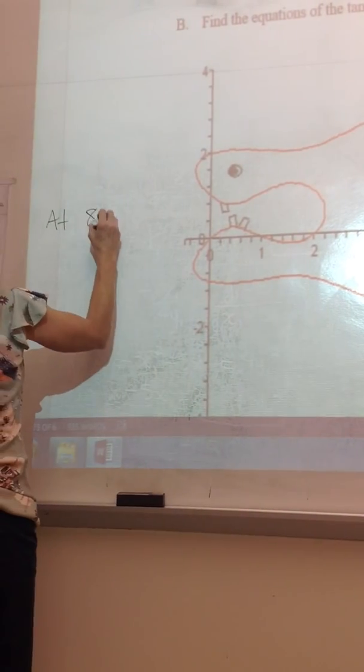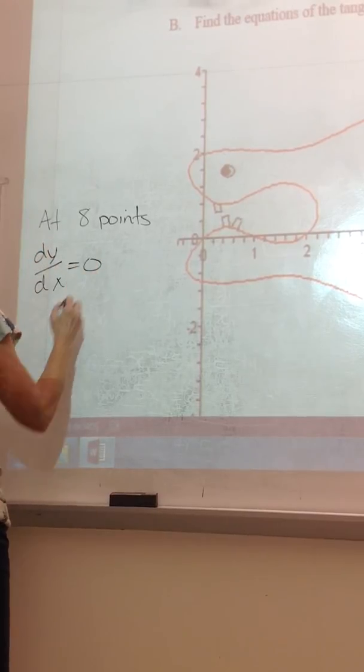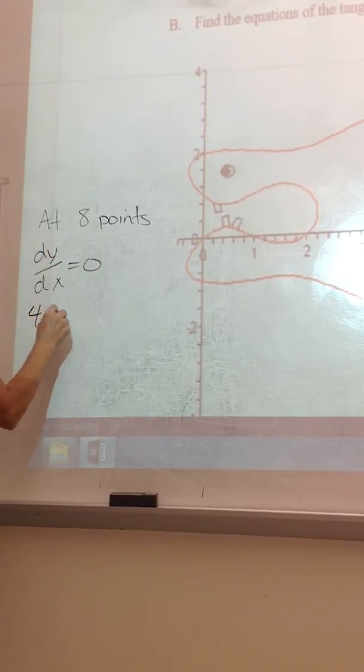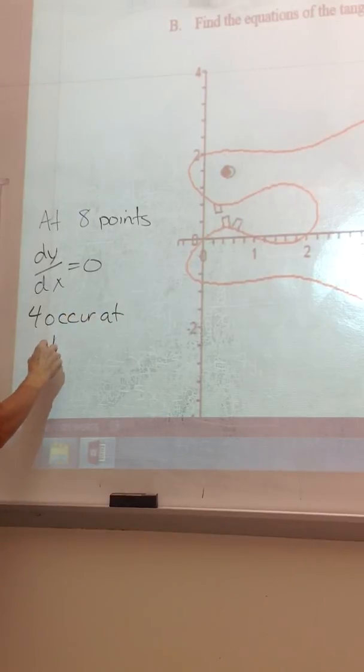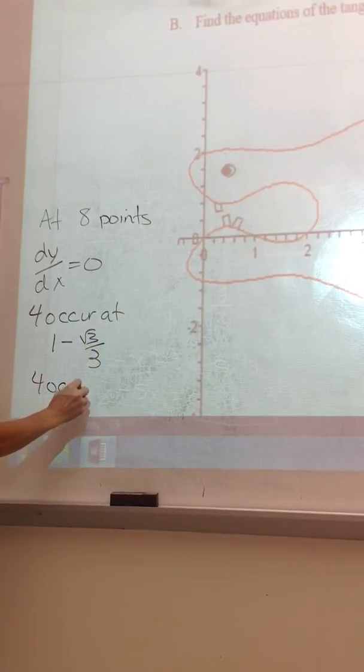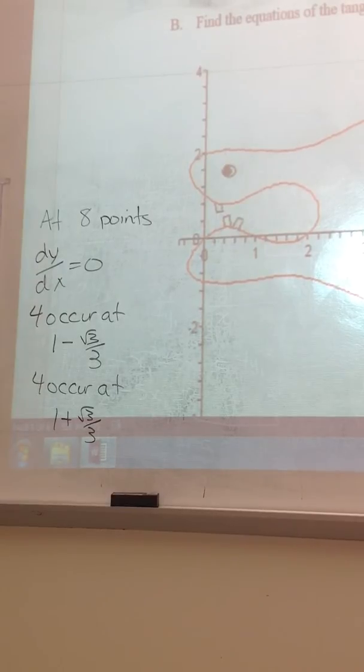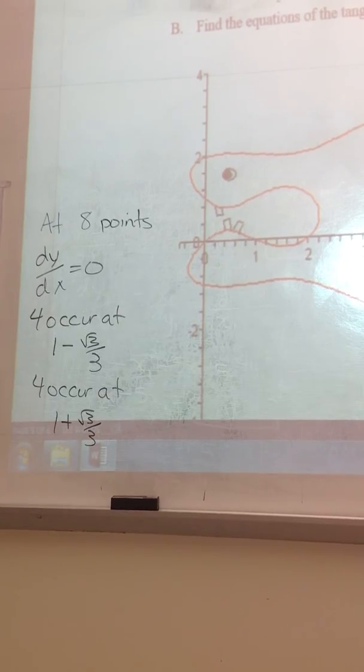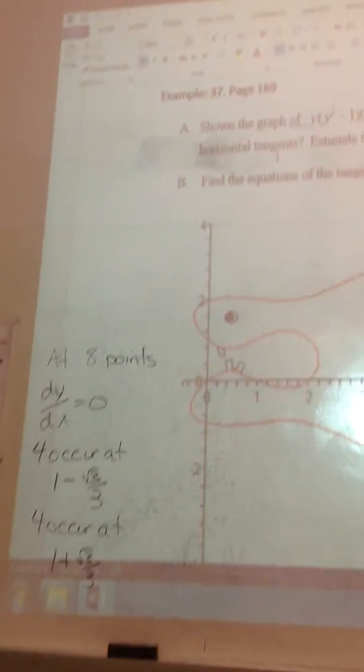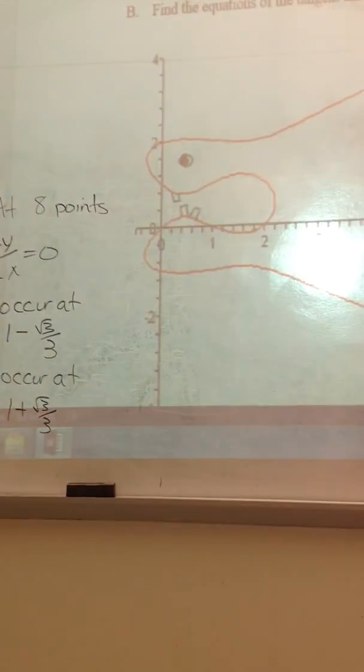To answer the first question, exactly, at eight points dy/dx equals zero. Four occur at one minus three over three. And if you wanted to try to find the y-coordinates, I'm going to talk about it because we should do something to kind of understand it.